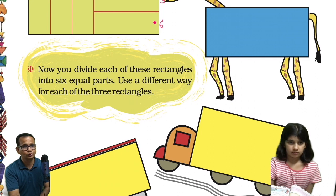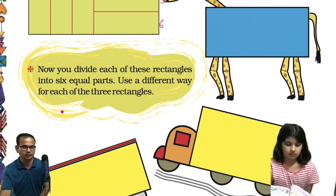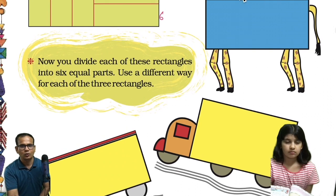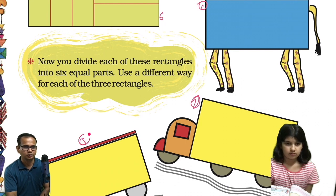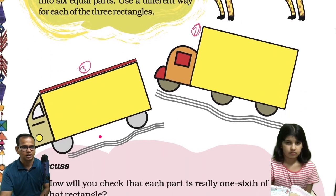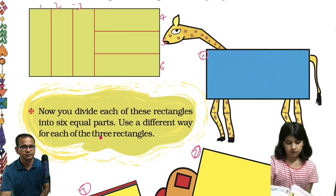Now you divide each of these rectangles into six equal parts. Use a different way for each of the three rectangles. So we have three rectangles — one blue one here, second here, and third one here. We have to divide these rectangles into six equal parts. Can you draw it in a different way? Do it.